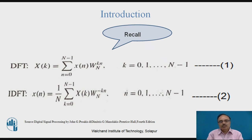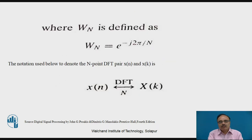N should be greater than or equal to L. The IDFT equation is given as (1/N) summation k equals 0 to N minus 1 of X(k) times W_N raised to minus kn, where n ranges from 0 to N minus 1. The twiddle factor e raised to minus j2π/N holds the property of periodicity, where the DFT can be calculated with respect to the frequency domain representation sampled at ω equals 2πk/N.